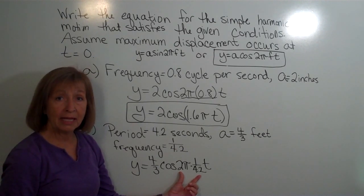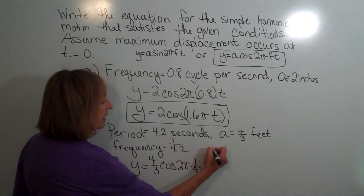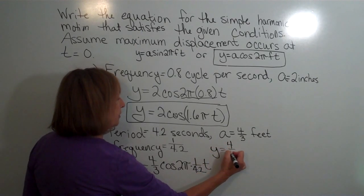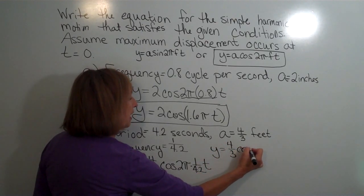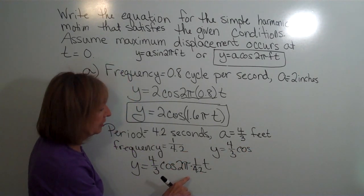And then multiplying this and removing common factor pairs, I'm going to get y equals 4.3 times the cosine. Now this would be 2π in the numerator and 4.2 in the denominator.